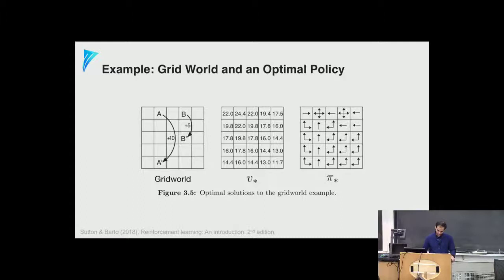Returning to the grid world, we now compute V* and π*. We no longer have negative values because the policy is not random — it has learned to follow trajectories that reach the high-reward states A and B.